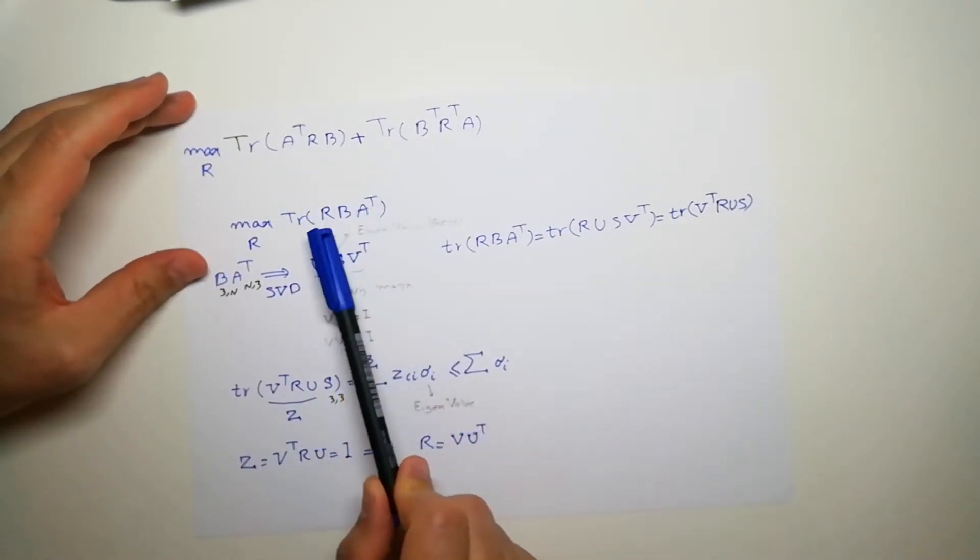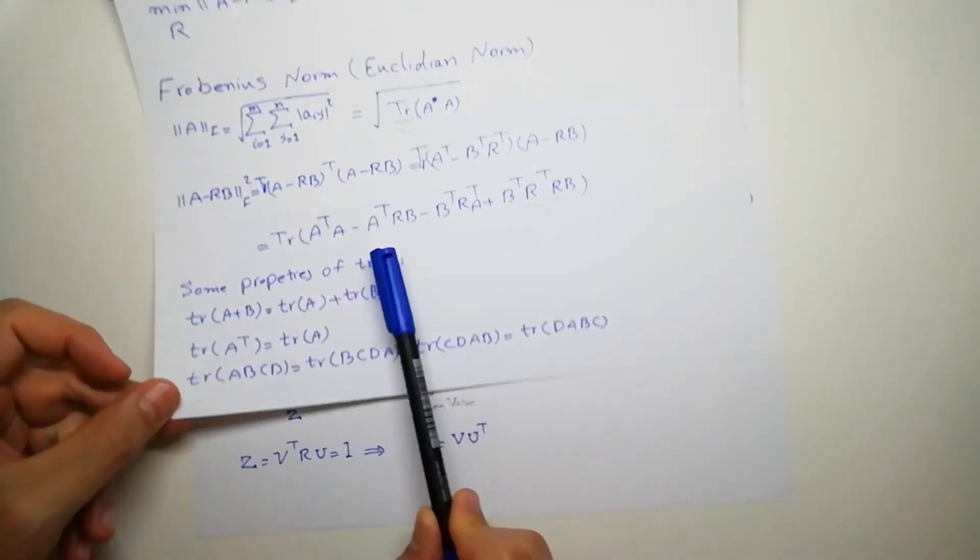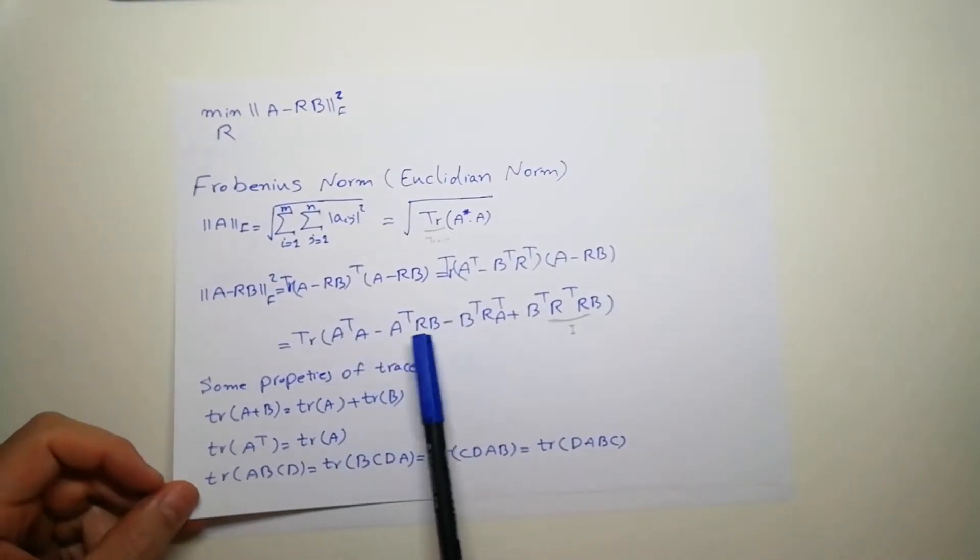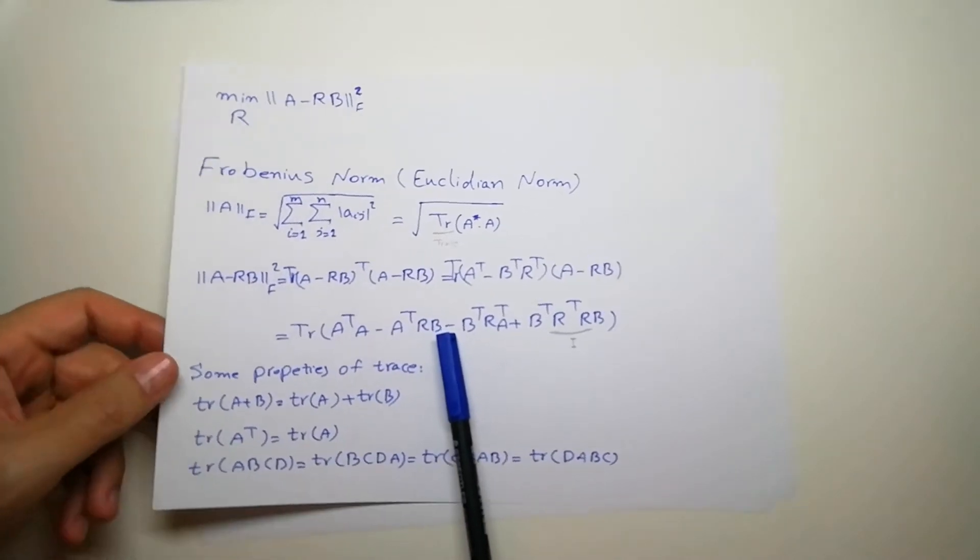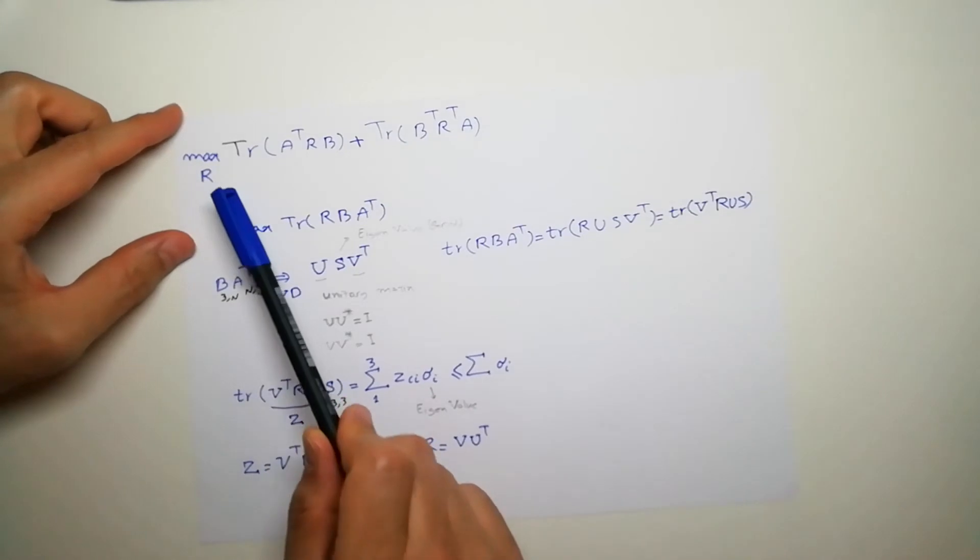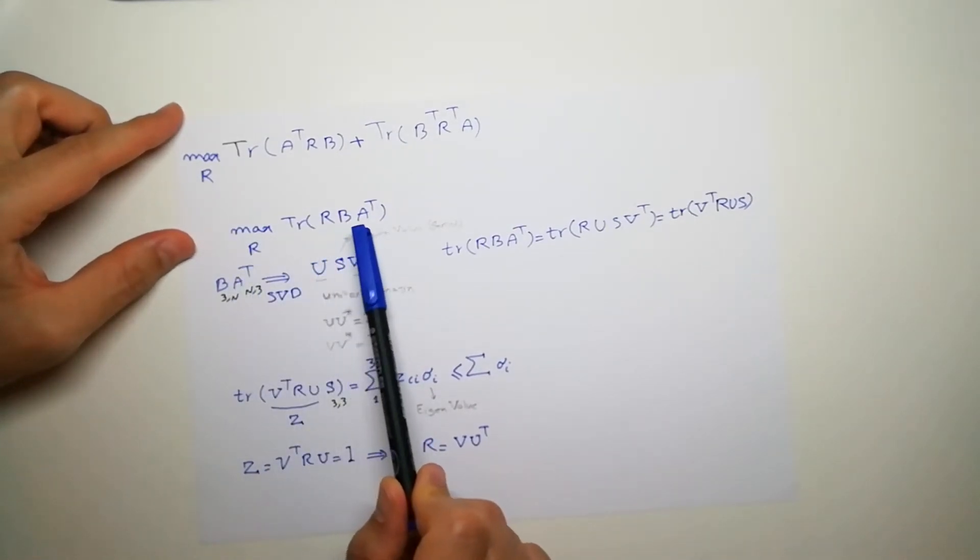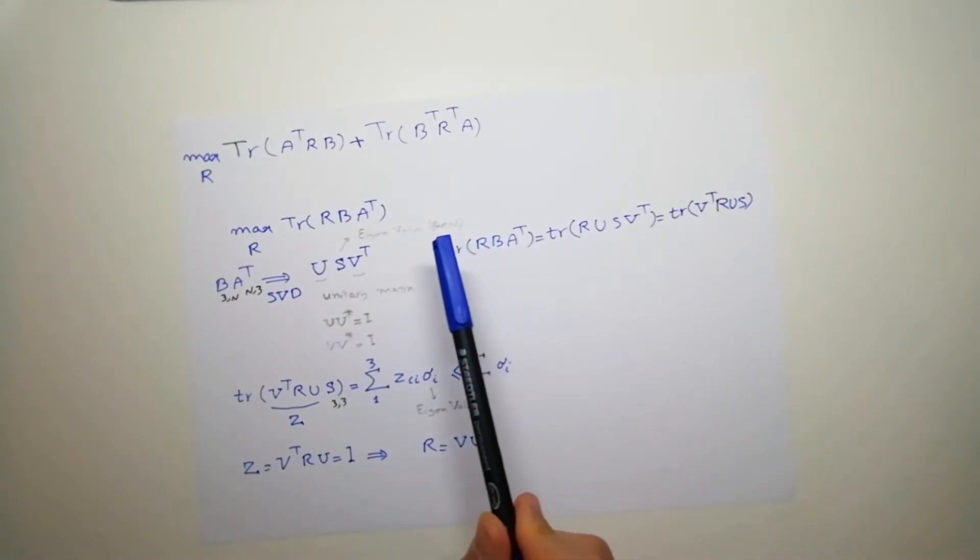And by using these two properties, circulation and transpose, we can actually write them in one term like this, A T, R B, sorry, R B A T. And because we have a negative sign here, our minimization going to be, it will turn into a maximization problem. So maximum trace of R B A T. We are looking for R that maximize this term. And B is our fixed number in our dataset.